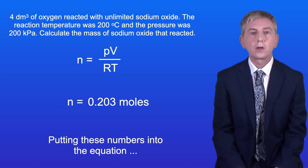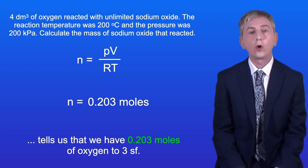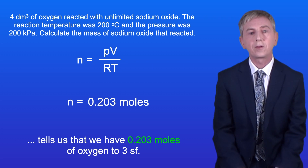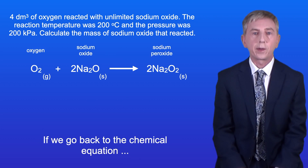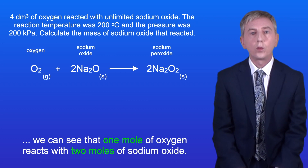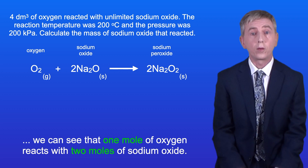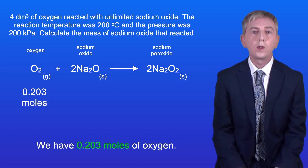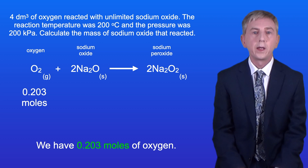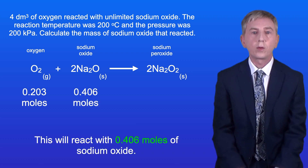Putting these numbers into the equation tells us that we have 0.203 moles of oxygen to three significant figures. Going back to the chemical equation we can see that one mole of oxygen reacts with two moles of sodium oxide. We've got 0.203 moles of oxygen, which will react with 0.406 moles of sodium oxide.